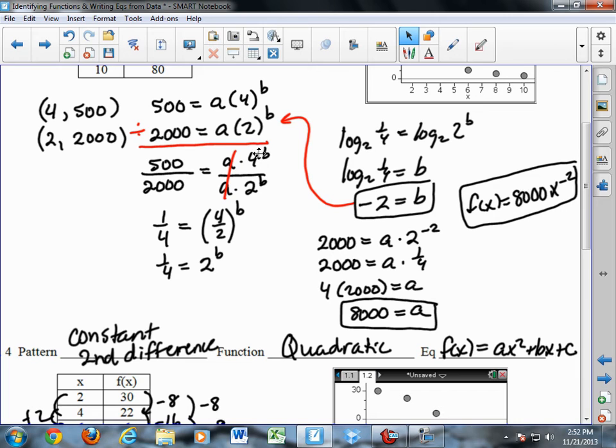4 to the b divided by 2 to the b is the same as 4 divided by 2 to the b. Same exponent, I can divide the bases. So 1 fourth equals 2 to the b. Many of you will recognize at this point that b is negative 2, which is fine. However, sometimes you'll end up with messier numbers that you won't be able to recognize.